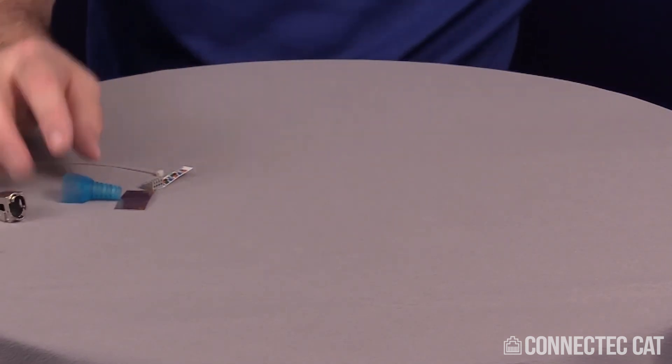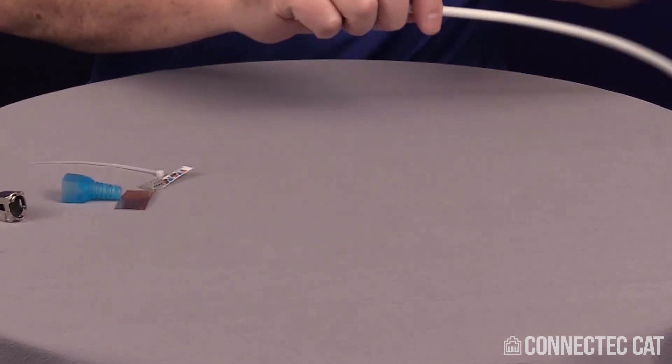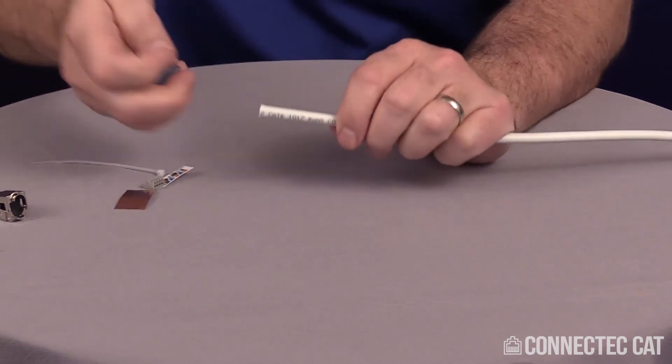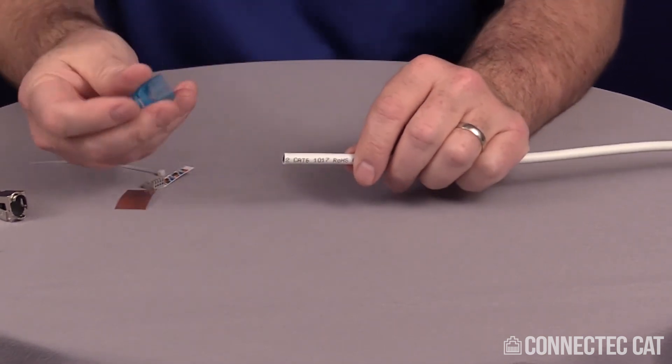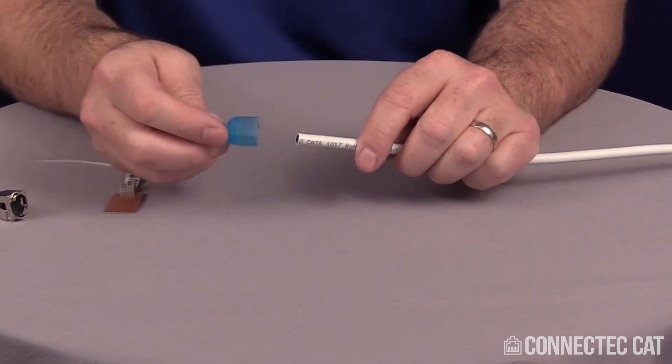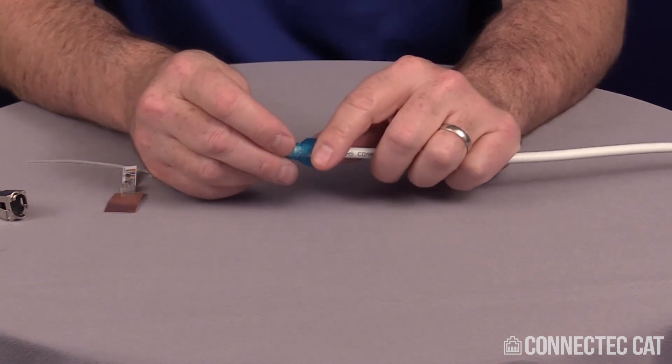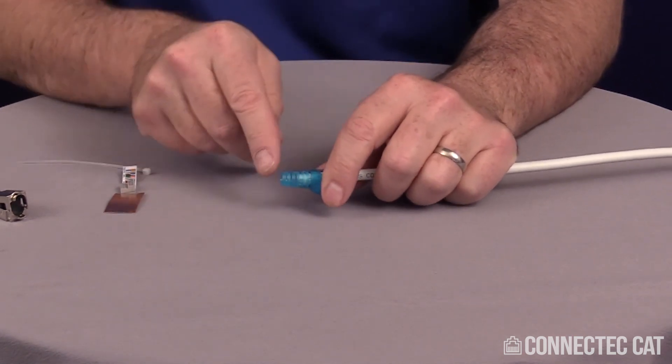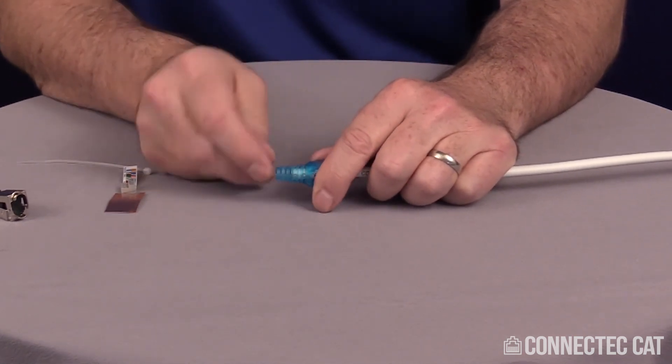The first step is going to be to size your boot to your cable. Cat6A cable is pretty big in diameter compared to Cat5E, so I'm going to go ahead and use this boot. I'm going to put it up the cable backwards so that the cable goes in and where it catches and stops is where I'm going to trim it off.